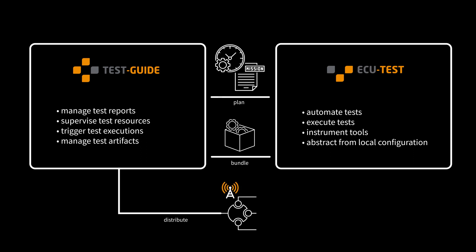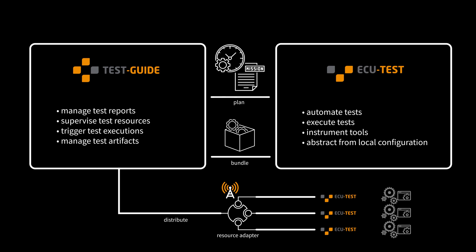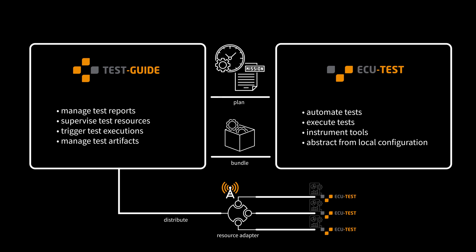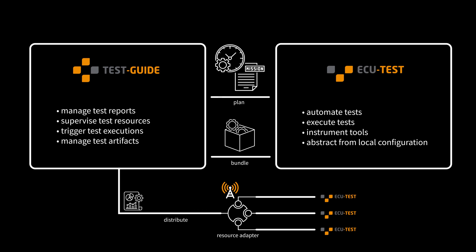The actual execution is controlled via a tool installed at a test resource, the Test Guide Resource Adapter. This Resource Adapter instruments ECU Test to locally execute the tests on the test resources. The Resource Adapter also sends the test results via ECU Test back to Test Guide to be analyzed there.